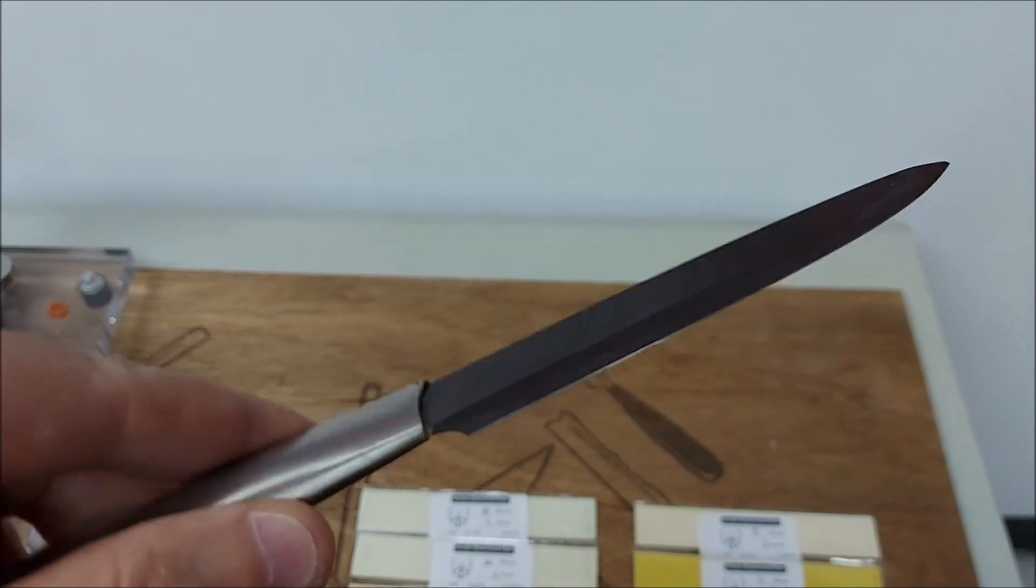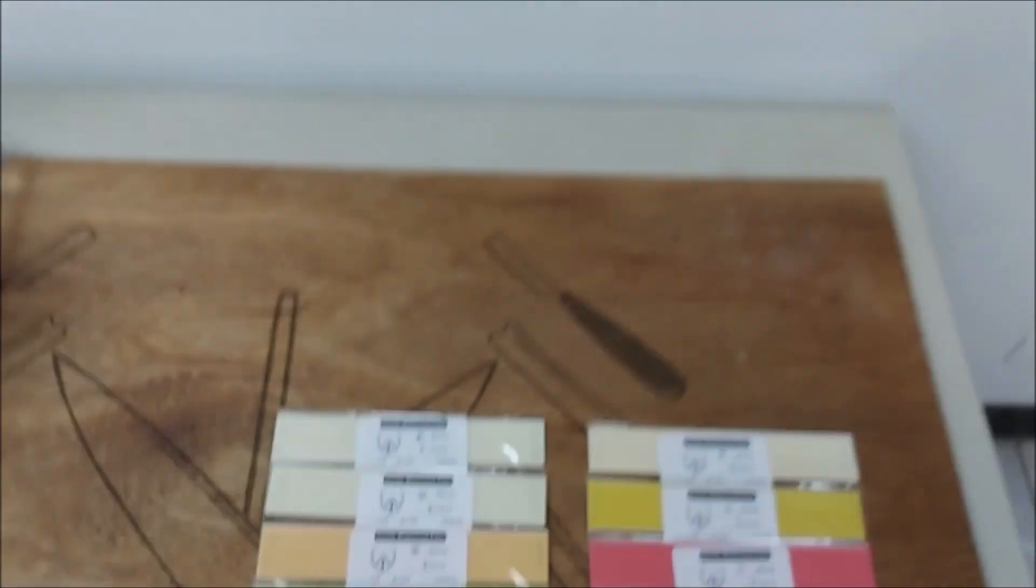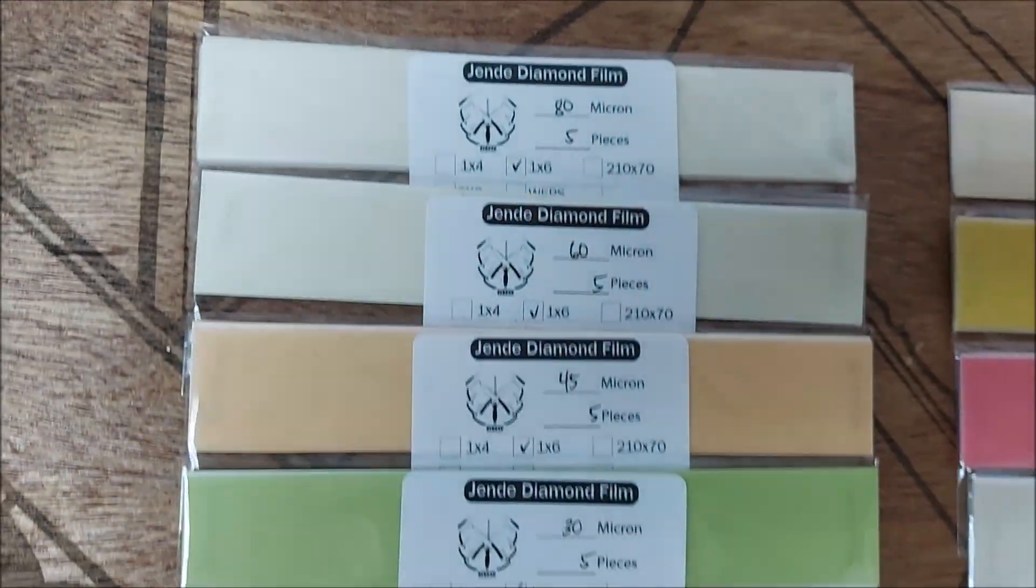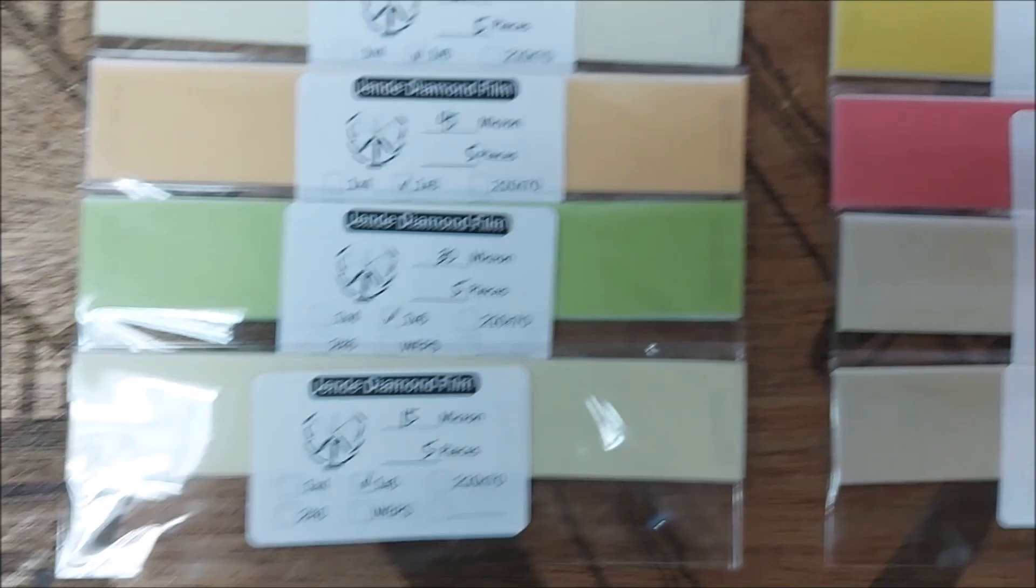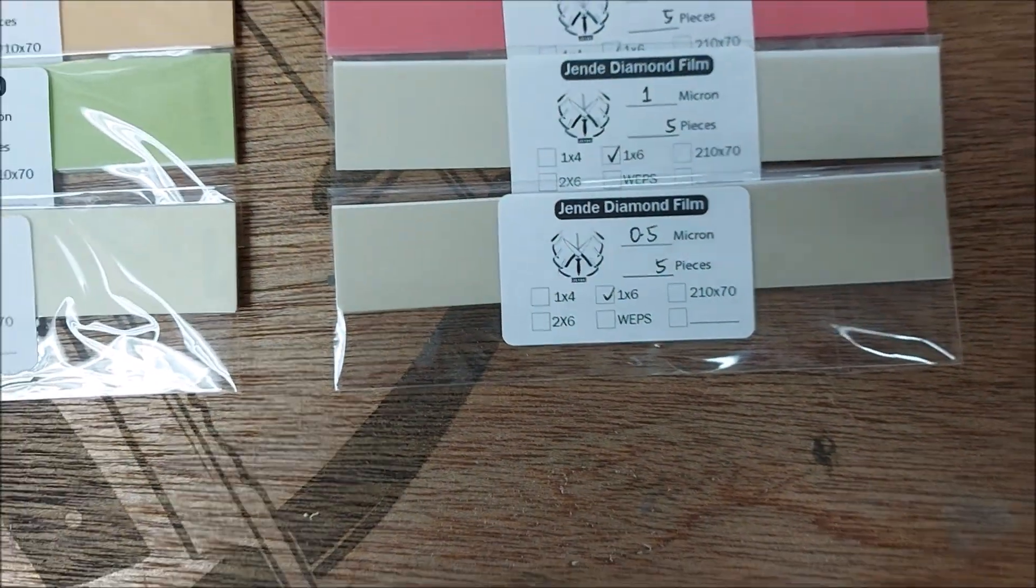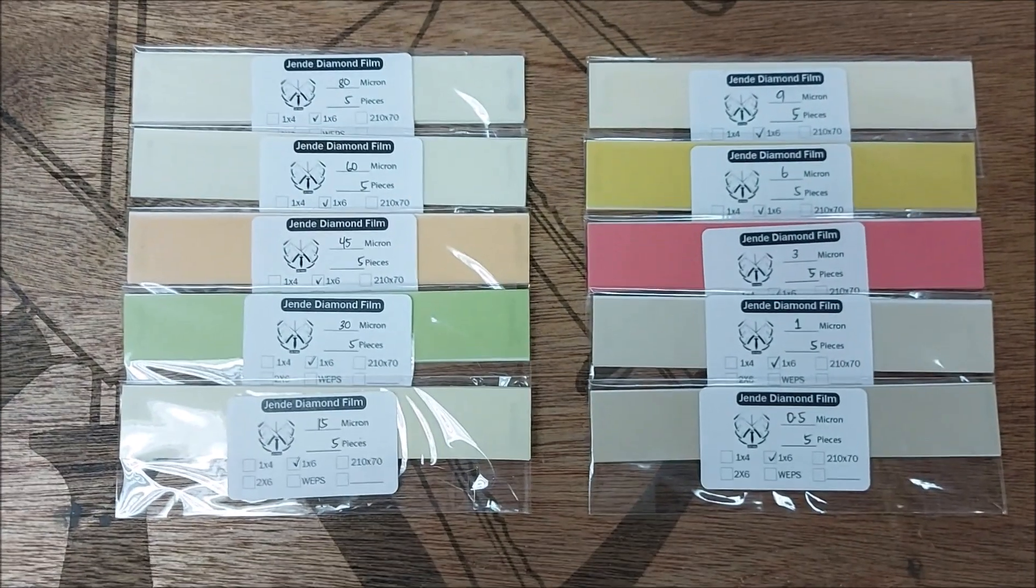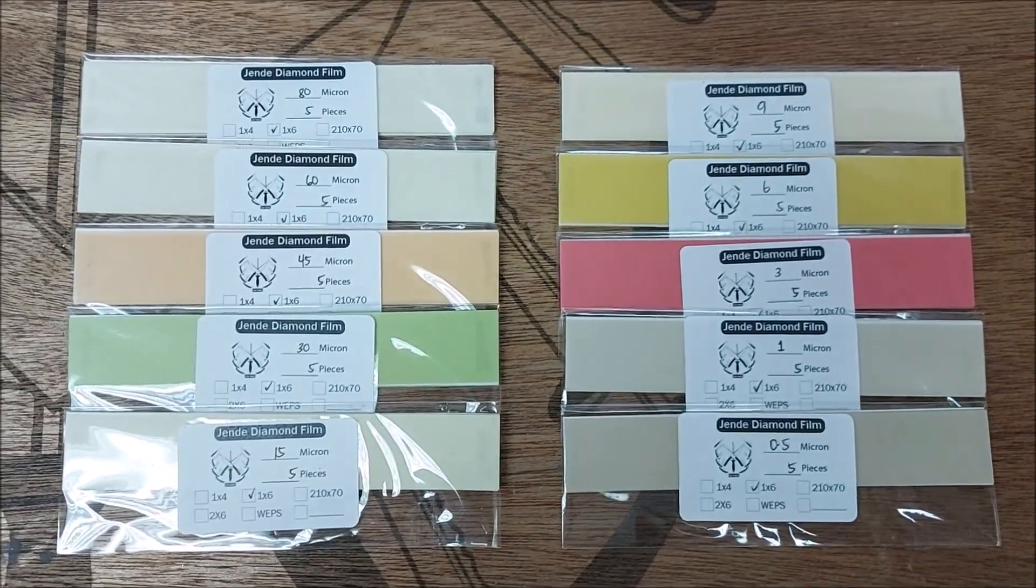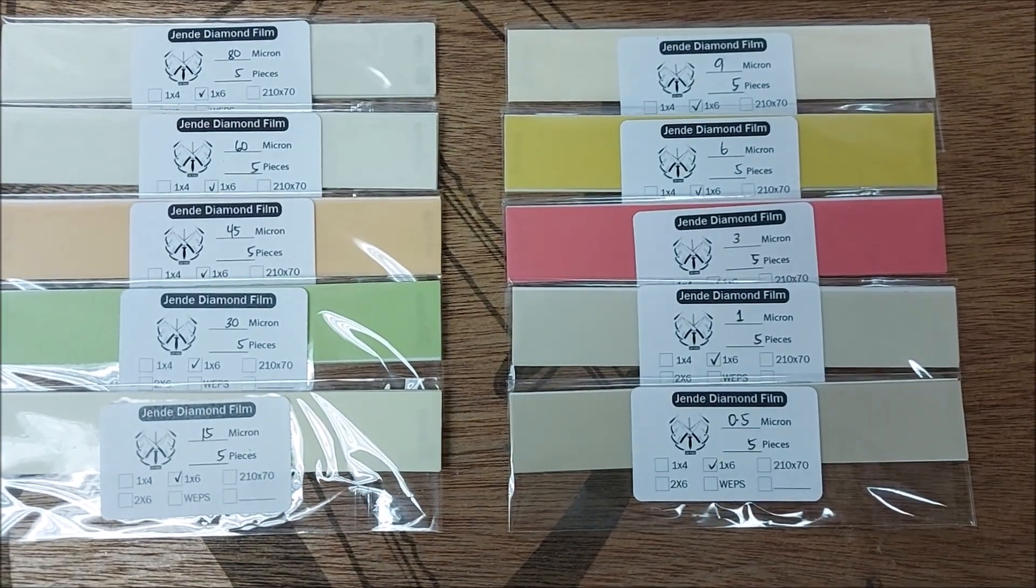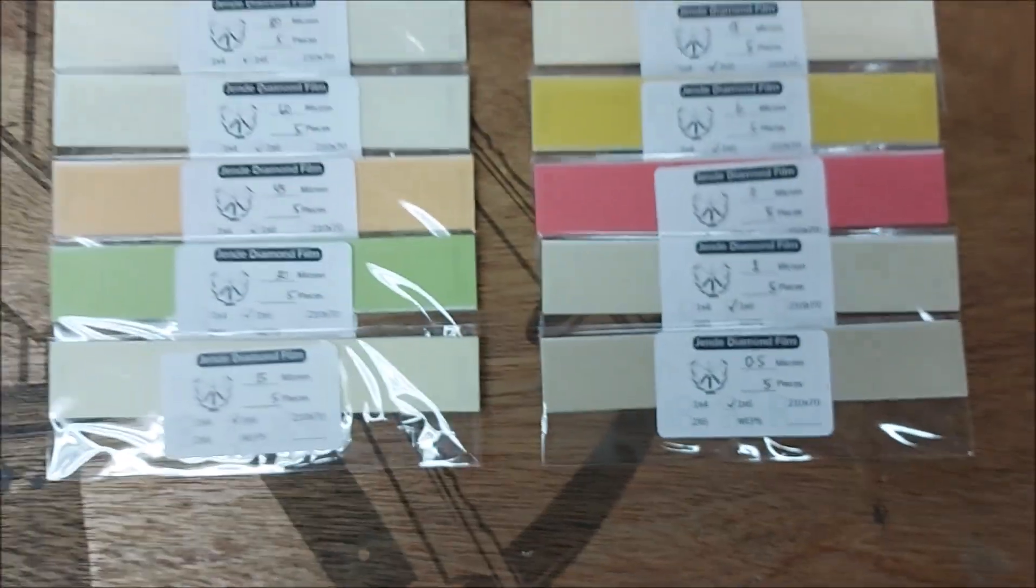So we're going to use our 80 micron. There's 10 grits: 80, 60, 45, 30, 15, 9, 6, 3, 1, and a half micron. So it's quite an extensive range from about 180 grit all the way up to about 30K with the half micron. So it's actually a full range here.